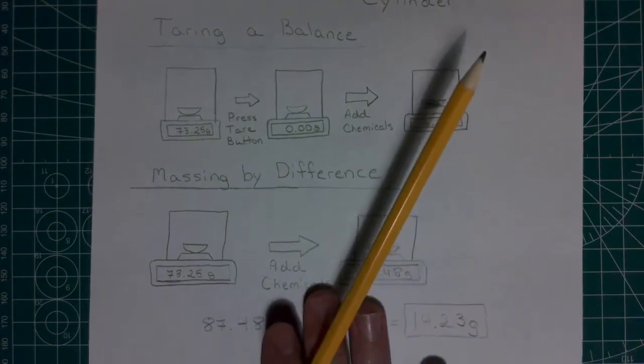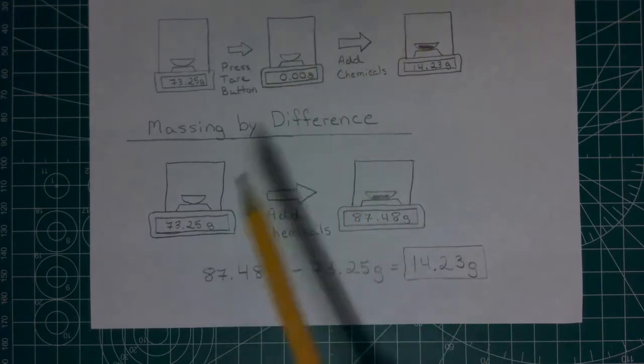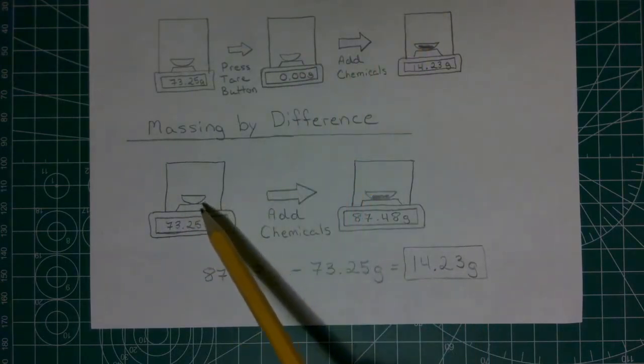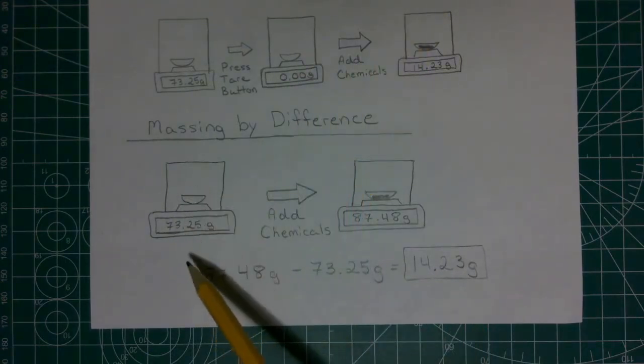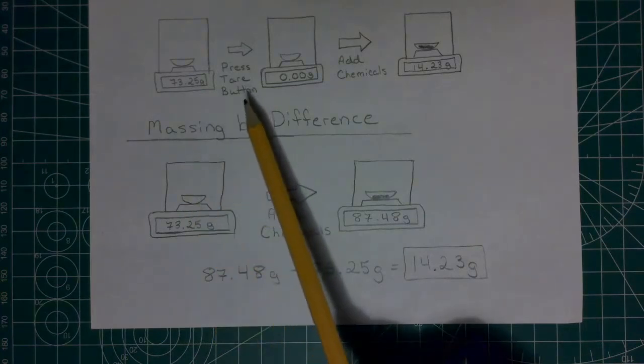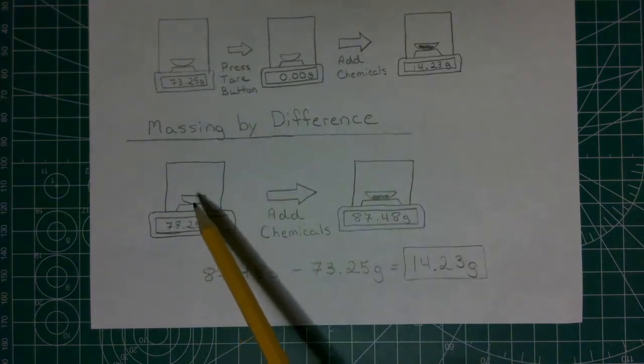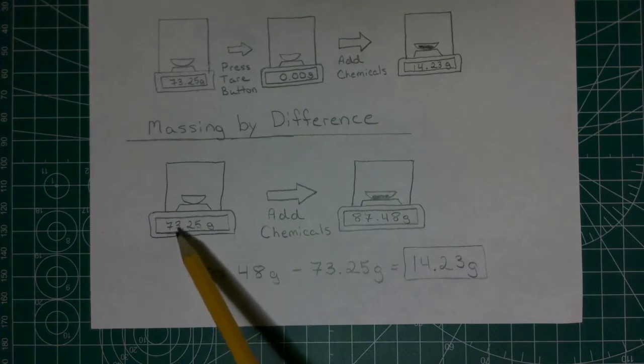Instead, what we're going to do in this lab, we're going to be massing by difference. This is where I just have it zeroed out with nothing on the pan. You would do that by pushing the tare button, and then I'm going to put the container on there, and I'm going to see the container has some mass, in this case 77.25 grams.